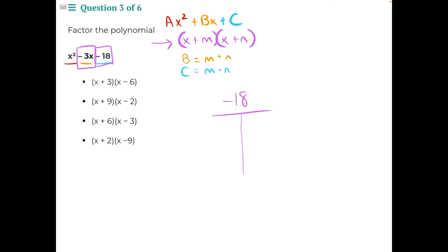So we could do positive 1 and negative 18, negative 1 and positive 18, 2 and negative 9 and vice versa, 3 and 6, negative 6 and vice versa.